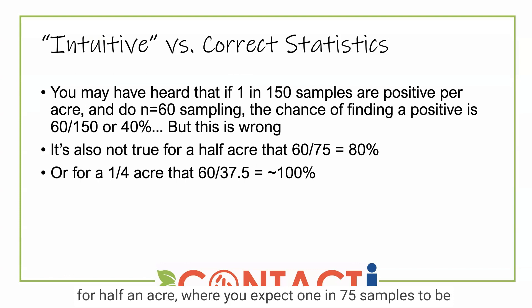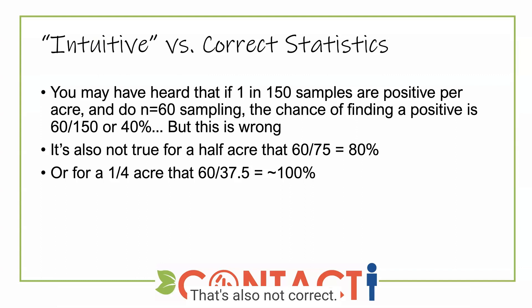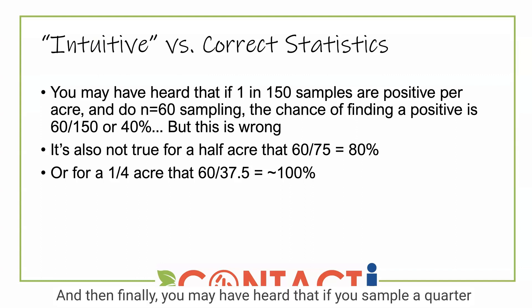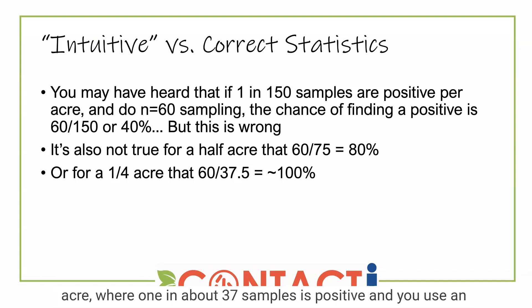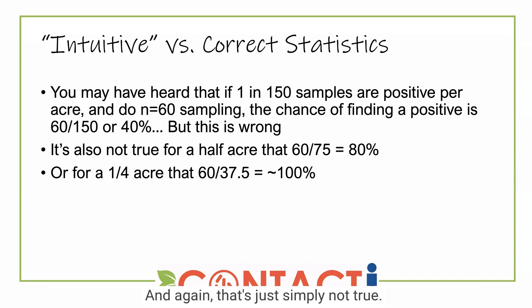You may have also heard that if you do an N equals 60 plan for half an acre where you expect one in 75 samples to be positive, you have an 80 percent chance of catching this problem. That's also not correct. And then finally, you may have heard that if you sample a quarter acre where one in about 37 samples is positive and you use an N equals 60 sampling plan, your chance of finding that problem is 100 percent. And again, that's simply not true.